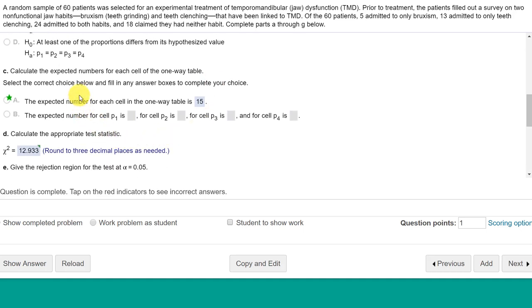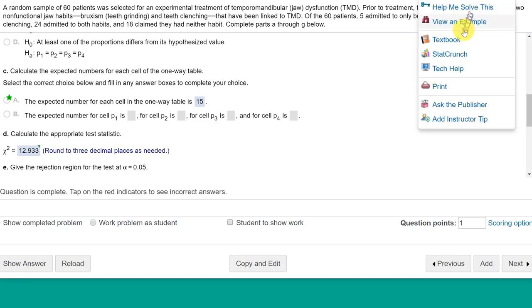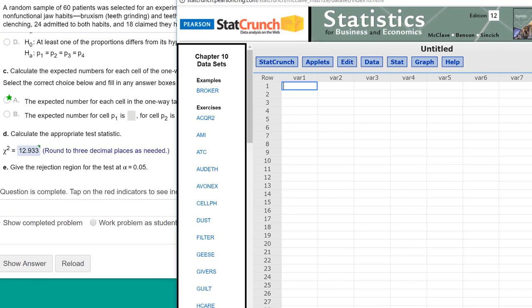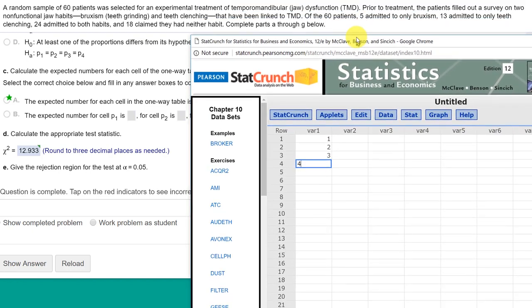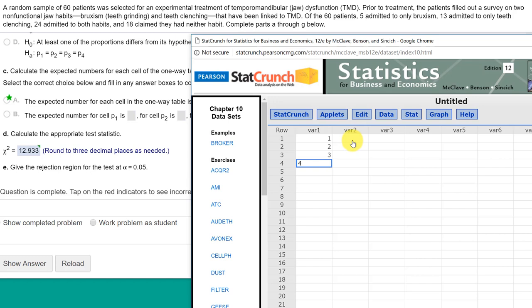We need to calculate the expected numbers, and the expected number for each one-way table is 15. How do we get that? Well, we're going to use StatCrunch. I'm going to go over here to StatCrunch, bring StatCrunch up, and the first thing we do, in this first column, enter one, two, three, four, because we've got four categories. And then I want to put in there the values that we're given, the counts. We've got five, 13, 24, 18.